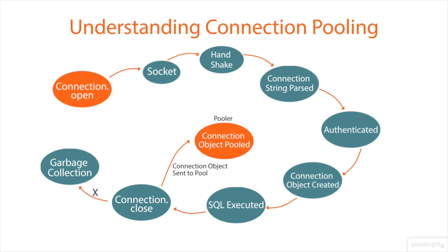When the application calls close on the connection, the pooler returns it to the pooled set of active connections instead of closing it. Once the connection is returned to the pool, it is ready to be reused on the next open call.